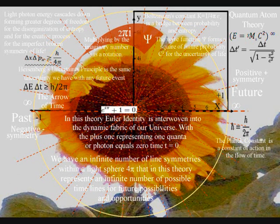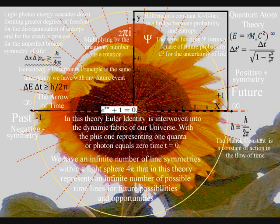We have an infinite number of line symmetries within a sphere. In this theory this represents an infinite number of potential timelines for the evolution of life.